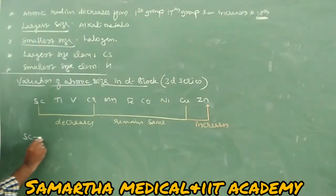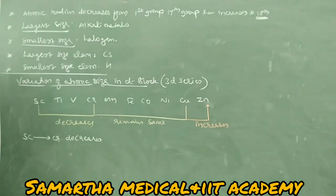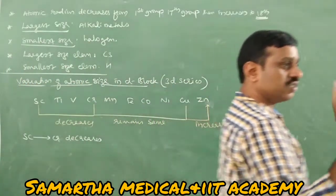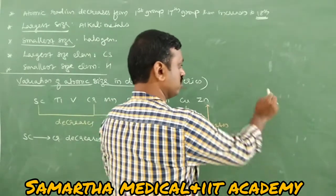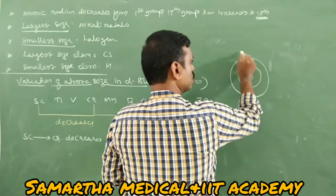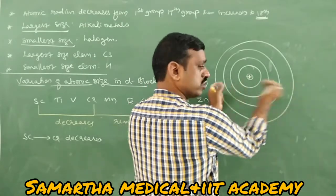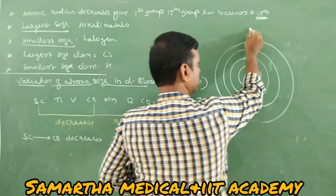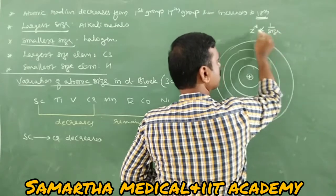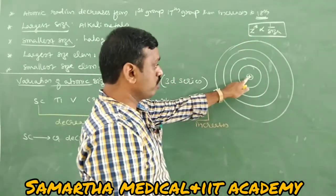What is the reason? In d-block elements, we study two important properties: effective nuclear charge (Z*) and screening effect. Z* is inversely proportional to atomic size — when effective nuclear charge increases, electrons come closer and size decreases.